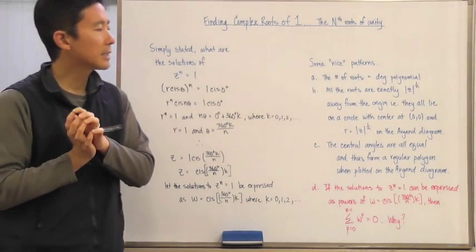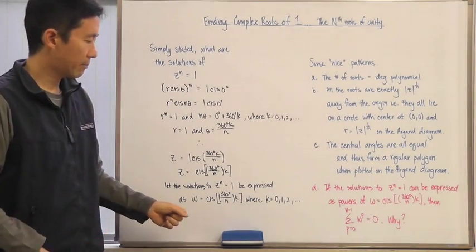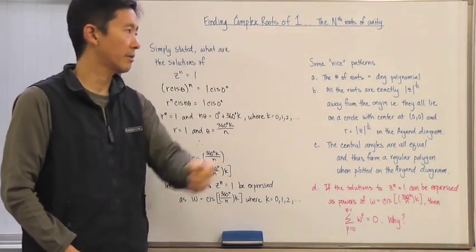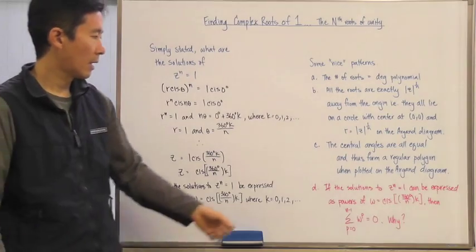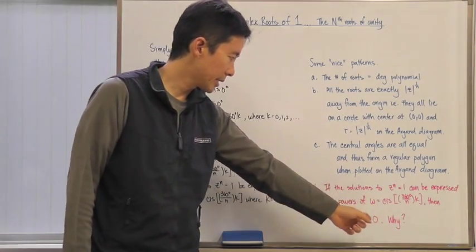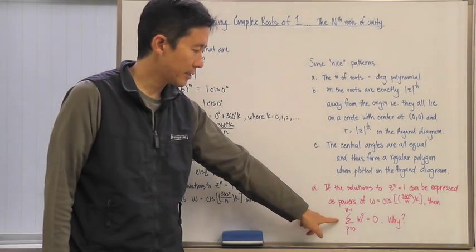Now the last thing that we're going to see is, in particular with regards to the complex roots of one or the nth roots of unity, that these solutions which all look like this are going to actually satisfy this particular summation.